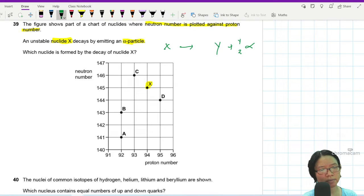So the proton number here is 94. So this is 94, meaning this one must be 92. Right? This one will be 92. So C and D is out. This is wrong.